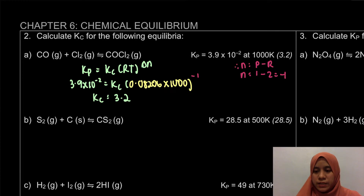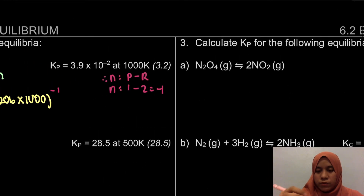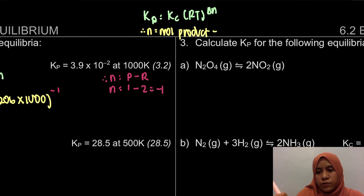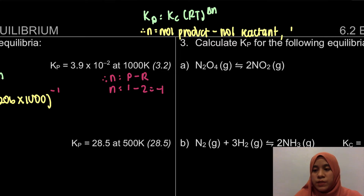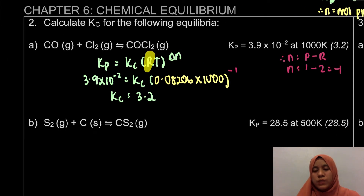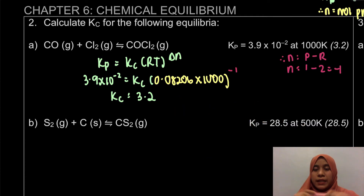Just to note: the formula is Kp = Kc × (RT)^(delta N), where delta N is moles of product minus moles of reactant, and temperature must always be in Kelvin because R = 0.08206 L·atm/mol·K.